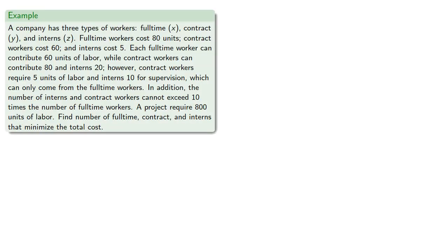So as an example of how this might work, we have a company with three types of workers: full-time, contract, and interns. Full-time workers cost 80, contract workers cost 60, and interns cost 5. Each full-time worker can contribute 60 units of labor, while contract workers can contribute 80, and interns 20.